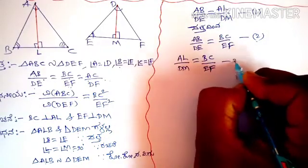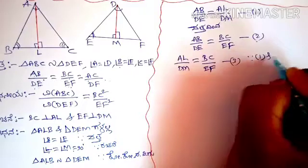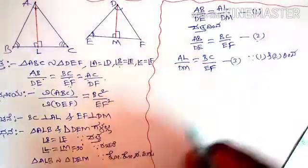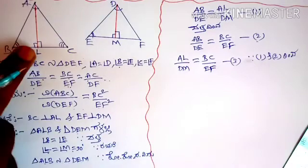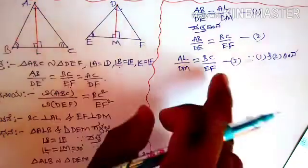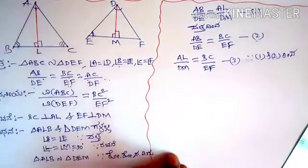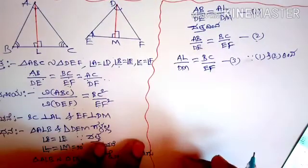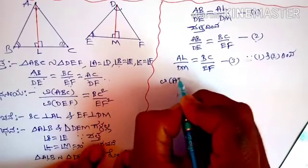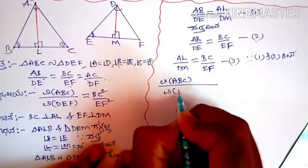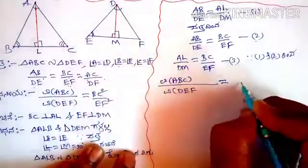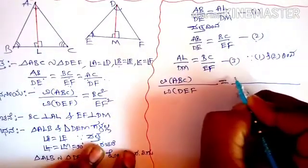Now we are going to show you how to do this. I will show you Vistirna A, B, C and Vistirna D, E. This is equal to Vistirna D, E.